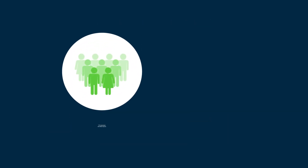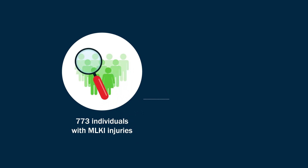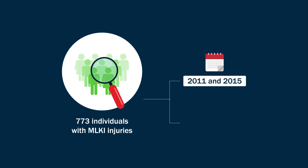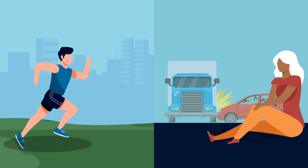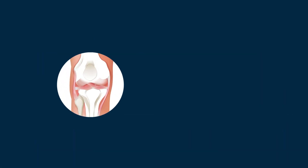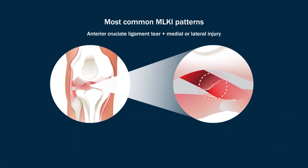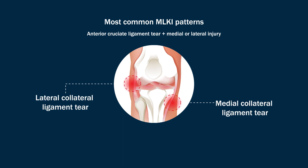They used this system to analyze data for 773 individuals with MLKI injuries between 2011 and 2015 from 14 different centers. The analysis revealed sports activity and vehicular accidents as being the most common mechanisms of knee injuries, and anterior cruciate ligament tear combined with injury to the medial or lateral side being the most common MLKI patterns.